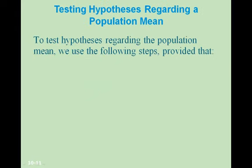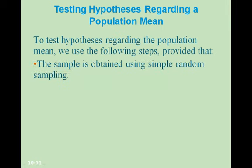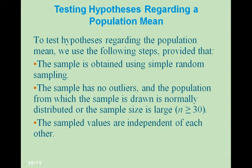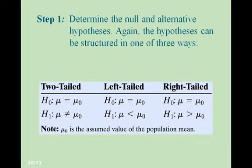To test hypotheses regarding the population mean, we use the following steps, provided that the sample is obtained using simple random sampling, the sample has no outliers, and the population is normally distributed or the sample size is large enough with n greater than or equal to 30, and the sampled values are independent of each other.